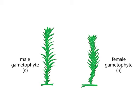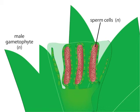Gametophytes are either male or female. The male gametophyte produces male gametes, sperm, inside reproductive structures called antheridia. The haploid gametophyte produces these haploid sperm by mitosis.